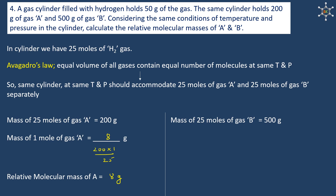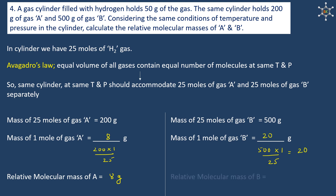Similarly, the mass of 25 moles of gas B is 500 grams, so the mass of 1 mole of gas B is 500 divided by 25, which is 20 grams. The relative molecular mass of B is 20 grams.